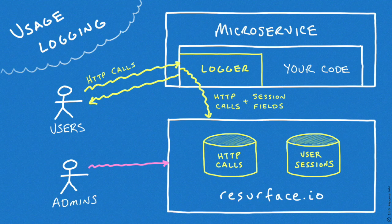This is done by adding a small logger library to the application we want to monitor. The logger selectively records HTTP calls to and from the application, including details about the HTTP request, HTTP response, and active user session. These HTTP calls can originate from web browsers, or mobile apps, or business-to-business integrations, or even from bots.